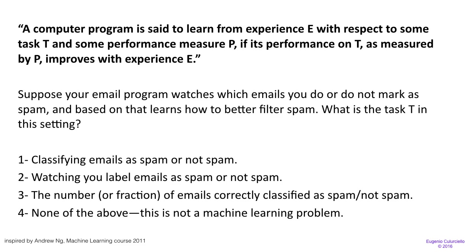Suppose your email program watches which emails you do or do not mark as spam, and based on that learns how to better filter spam. What is the task T in this setting? It could be classifying emails as spam or not spam, watching you label emails as spam or not spam, or the fraction of emails correctly classified as spam or not spam. What do you think this is?